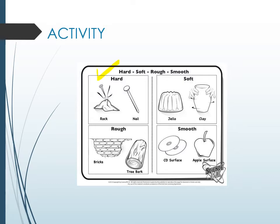There are hard objects like rock and nail, soft objects like jelly and clay, rough objects like bricks and tree bark, and smooth objects like CD surface and apple surface. These are different types of textures.